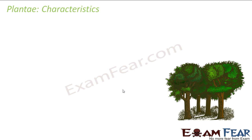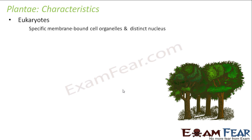Let us look at the very basic characteristics of the plant kingdom. We should know what are those specific things which distinguish organisms under the plant kingdom from any other kingdom — how is the plant kingdom different from Monera, Protista, Fungi, or Animalia? The first basic characteristic is that plants are eukaryotes, meaning they have specific membrane-bound cell organelles and a distinct nucleus. We all know what eukaryotes are by now.